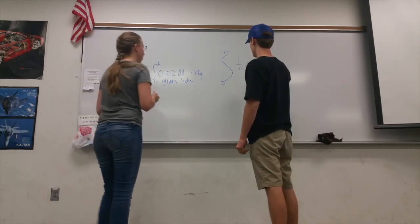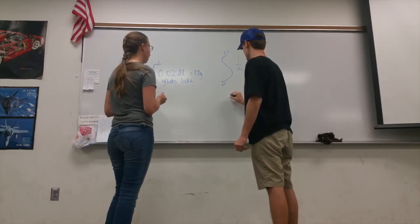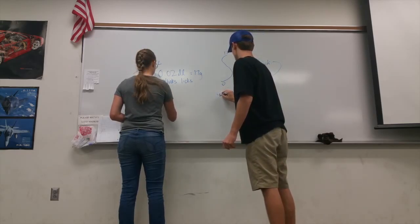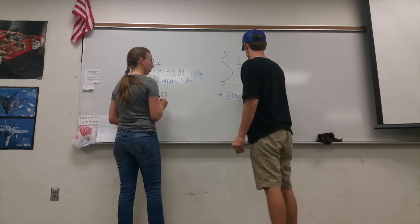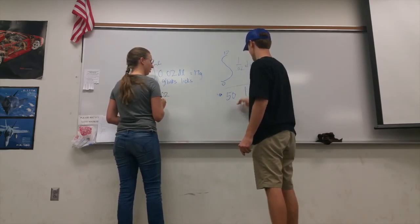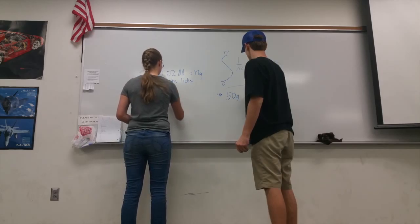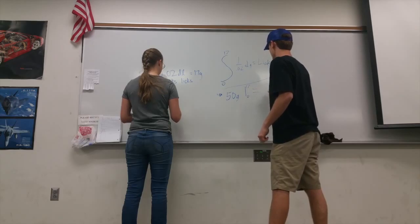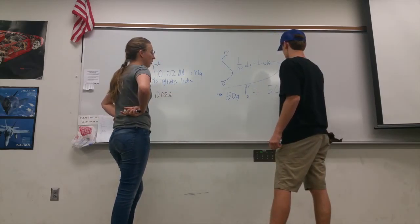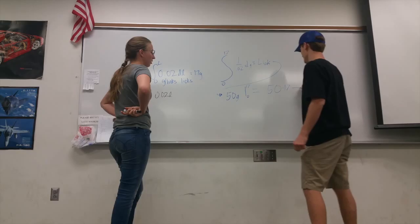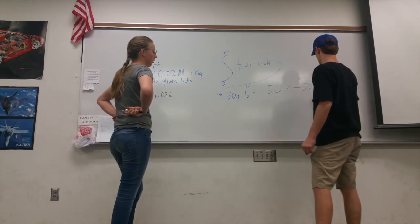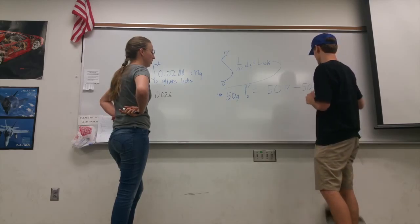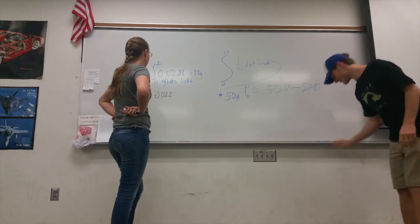We want to use the first fundamental theorem of calculus. This is going to be 50x from, or 50g, 50g from 0 to 17. That's what we want to evaluate. So it's going to equal 50 times 17 minus 50 times 0, so just 50 times 17. Let's just cancel that. And this is just the exact same thing.